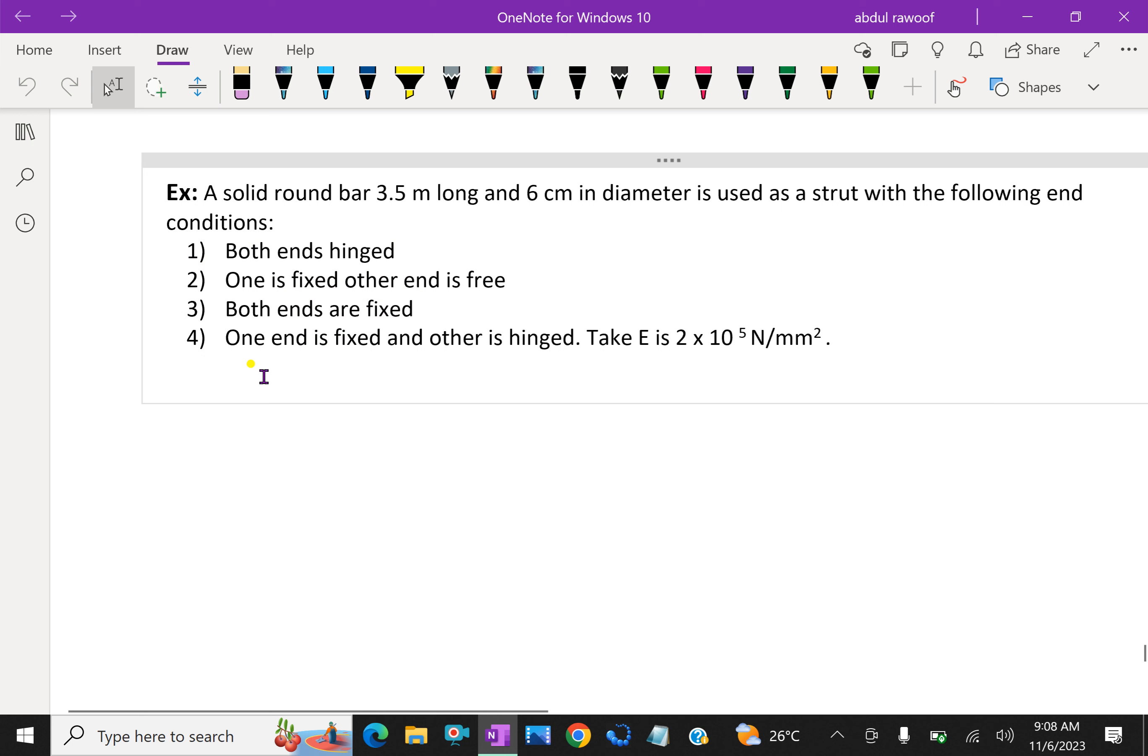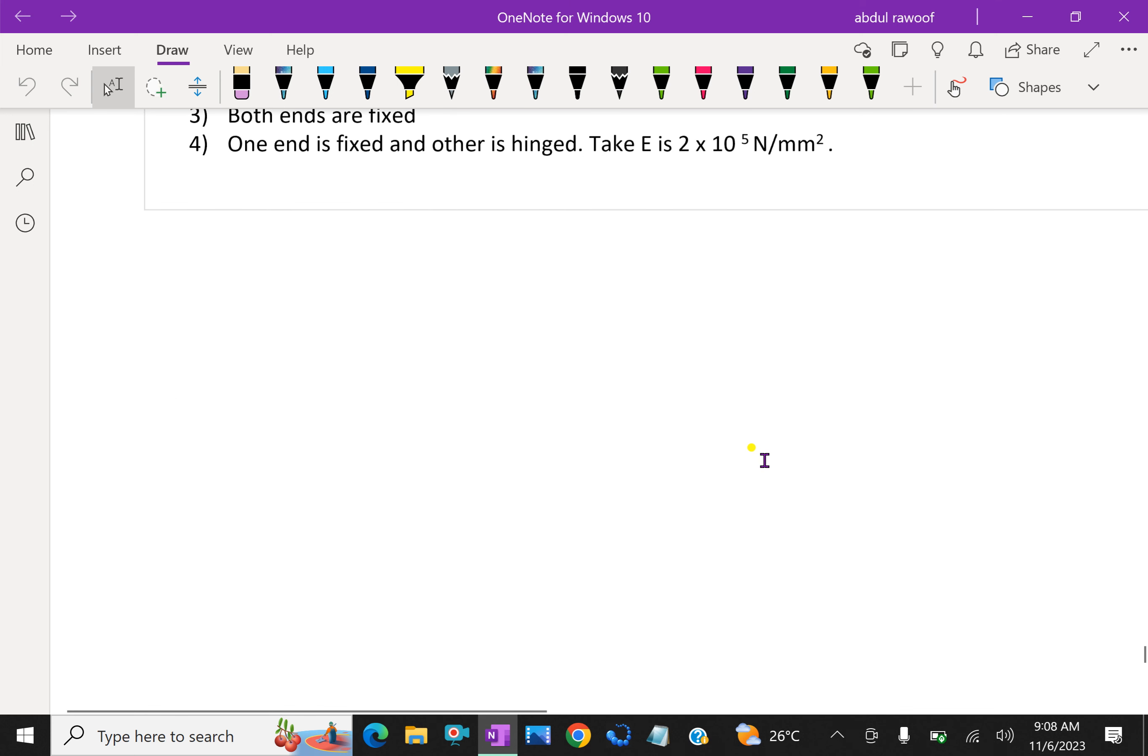Both ends are hinged. One end is fixed and other end is free. Both ends are fixed. And fourth, one end is fixed and other end is hinged. Take E equal to 2 into 10 power 5 Newton per mm square.